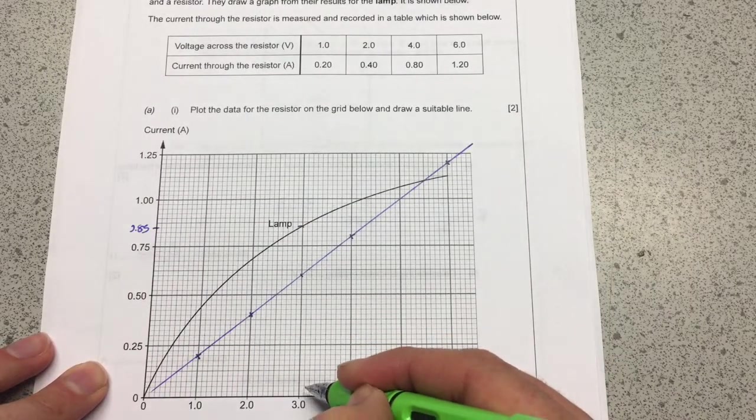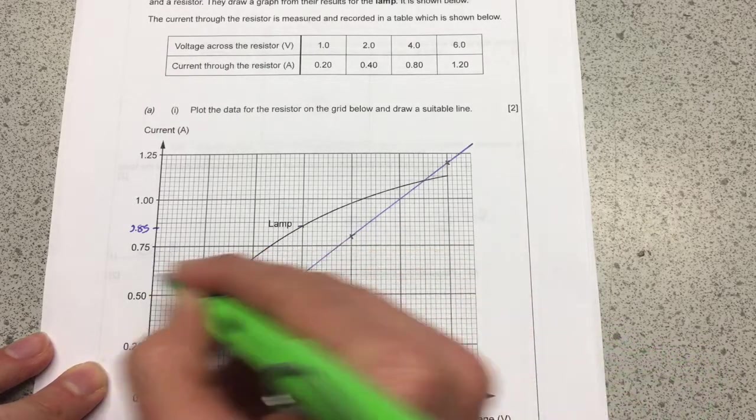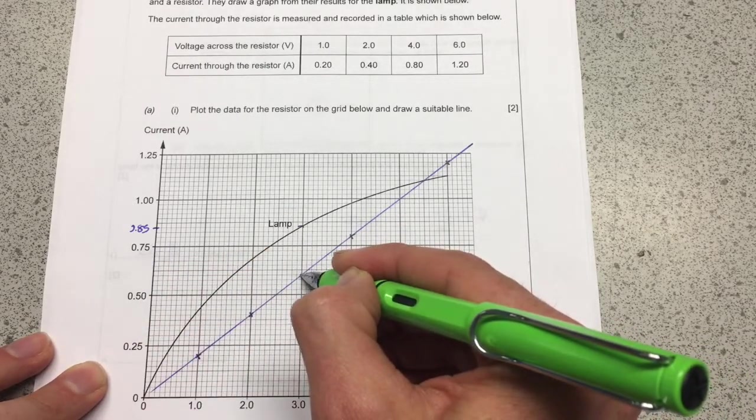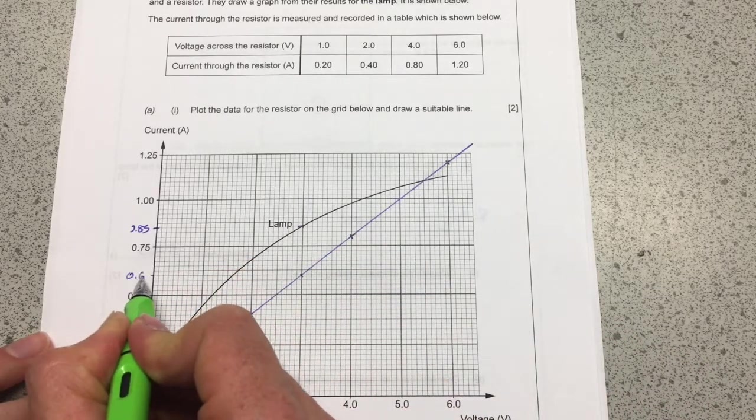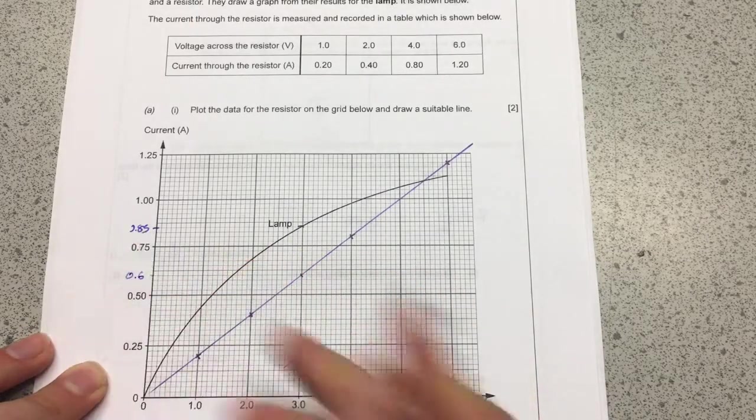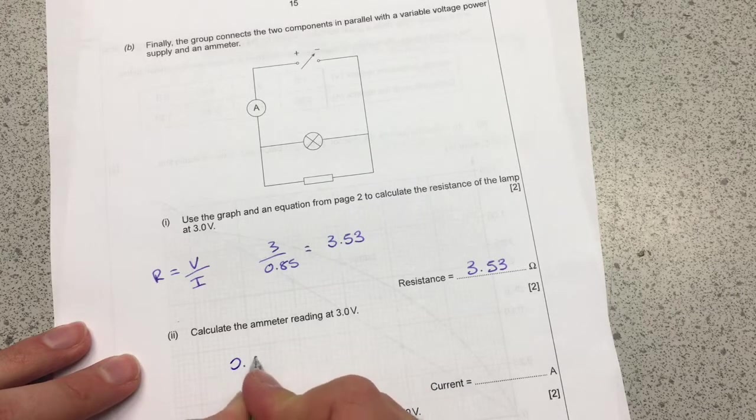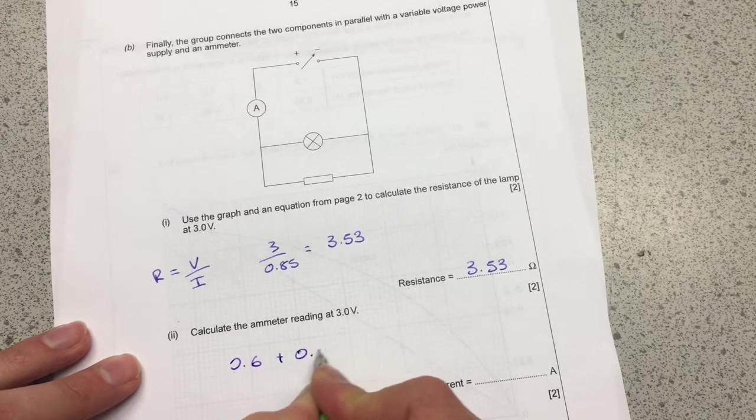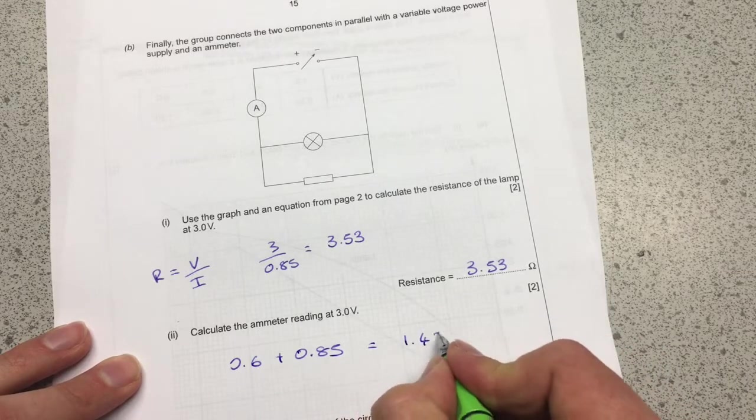Still at three volts so I can read off the current in the fixed resistor which is 0.6. This axis here. And through the lamp which is 0.85. So that's going to be 0.6 plus 0.85. That's going to equal 1.45.